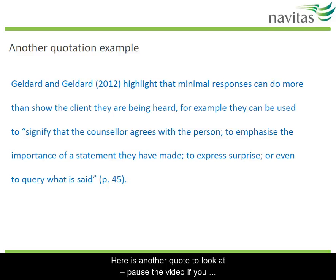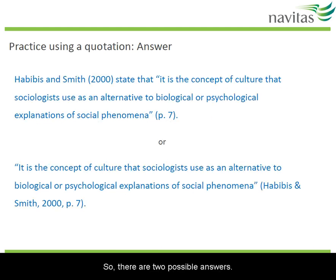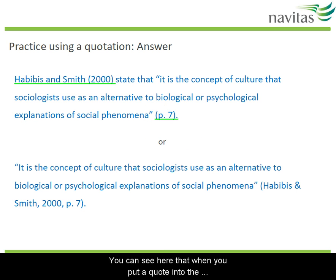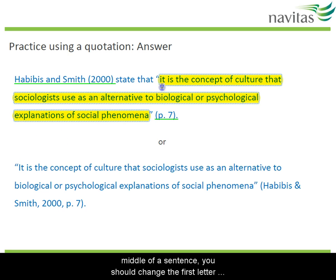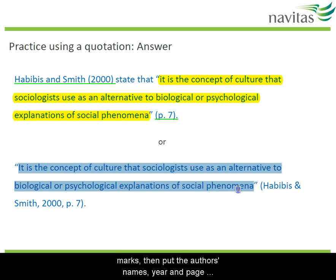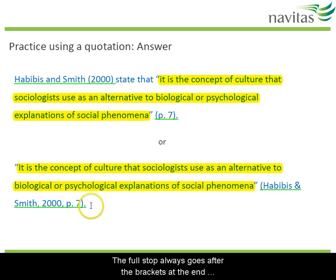Here's another quote to look at. Pause the video if you want to read this one. Now it's your turn to practice. In blue we have some information that comes from this book. What in-text referencing would you put with this quote? Pause to do the activity. There are two possible answers. Either you can put the authors first, followed by the year in brackets and the page number in brackets at the end. Don't forget quotation marks. You can see that when you put a quote in the middle of a sentence, you should change the first letter to lower case if necessary. Or you can put the information first in quotation marks, then put the author's names, year and page number all in brackets at the end. The full stop always goes after the brackets at the end of the sentence.